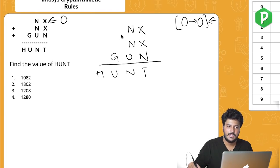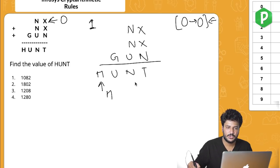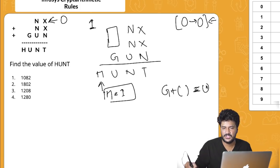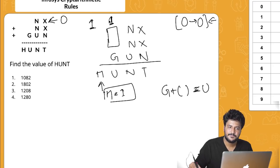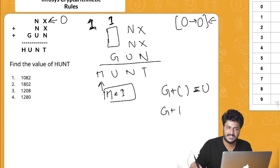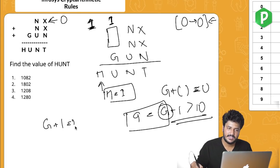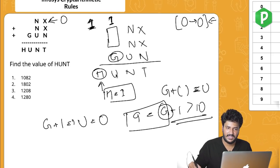The leading carry digit H equals 1. In the leftmost column, G plus nothing doesn't give G — it gives U, so there's a carry from the previous step. Since G plus 1 carry generates a value greater than 10, G must equal 9. Then 9 plus 1 equals 10, so U=0. Found so far: H=1, G=9, U=0.